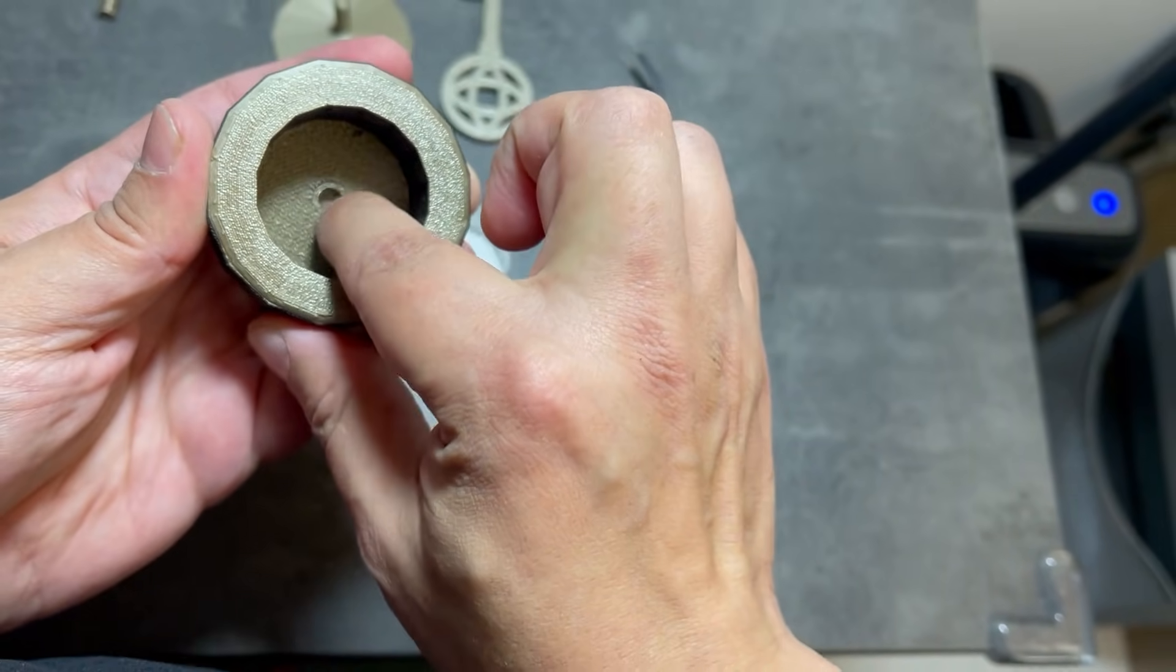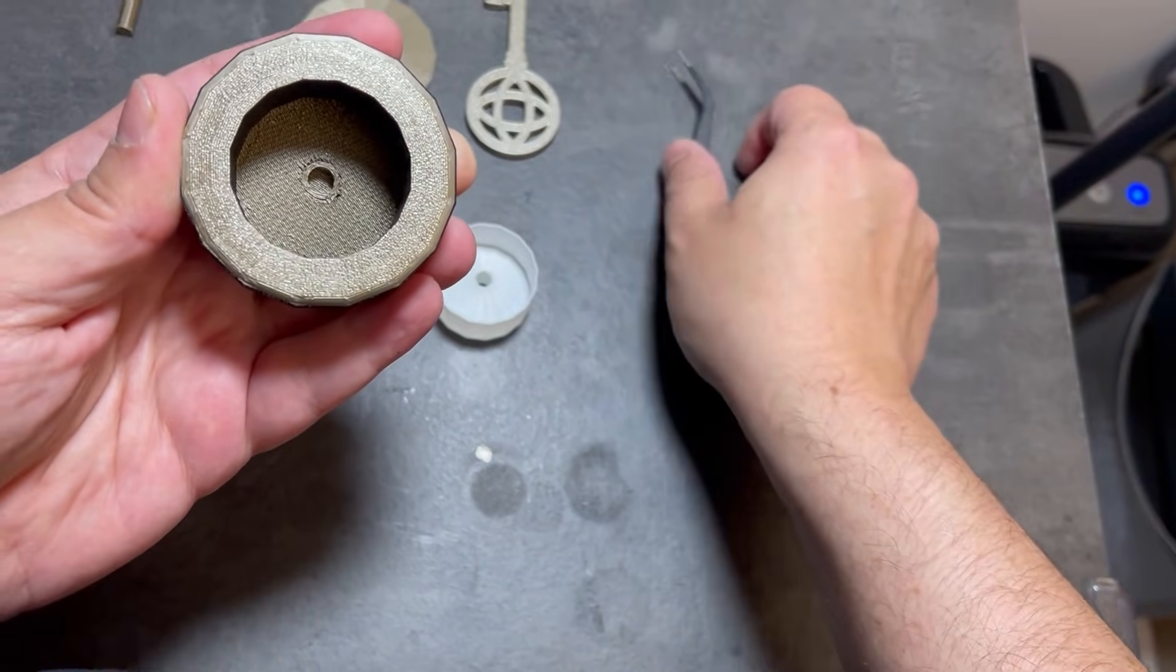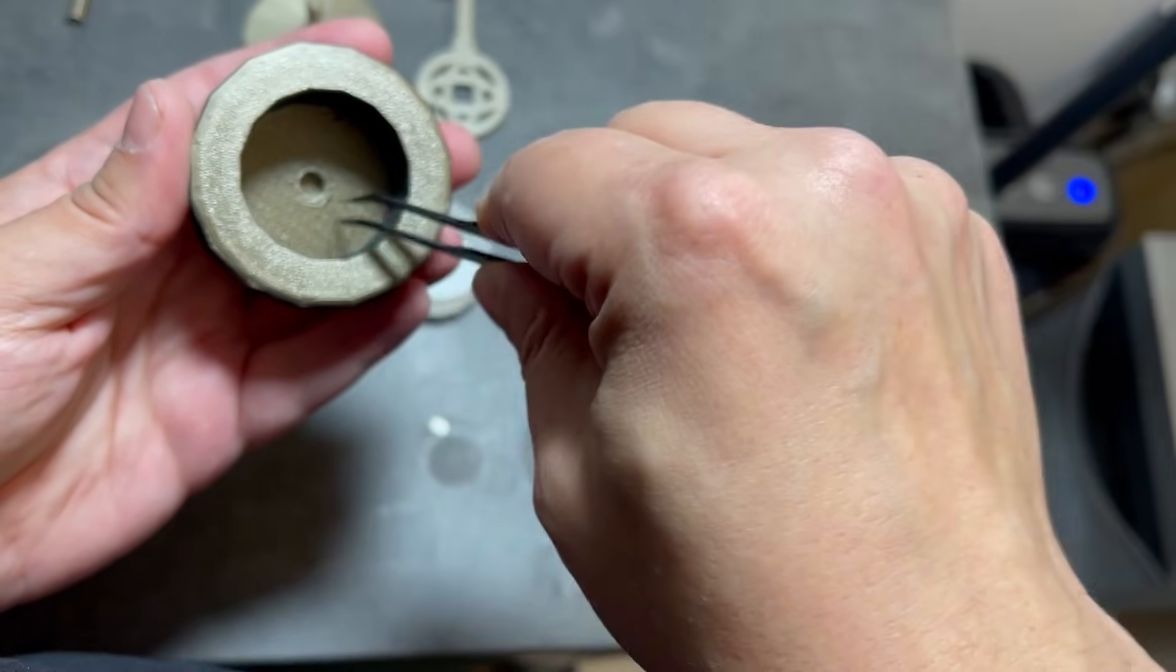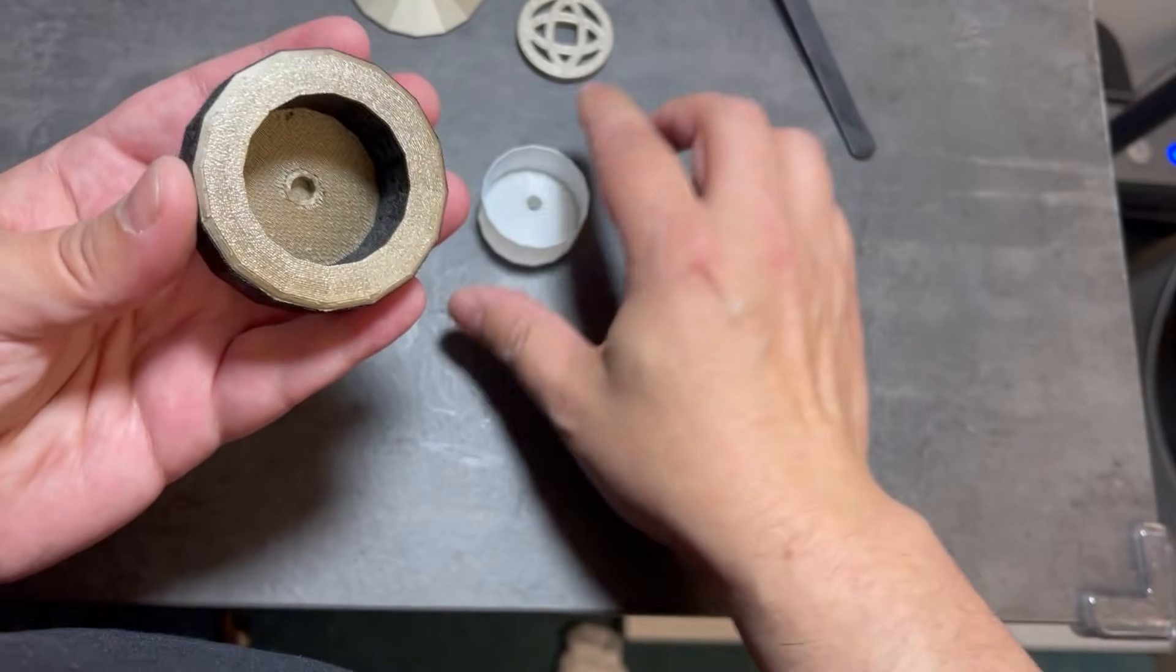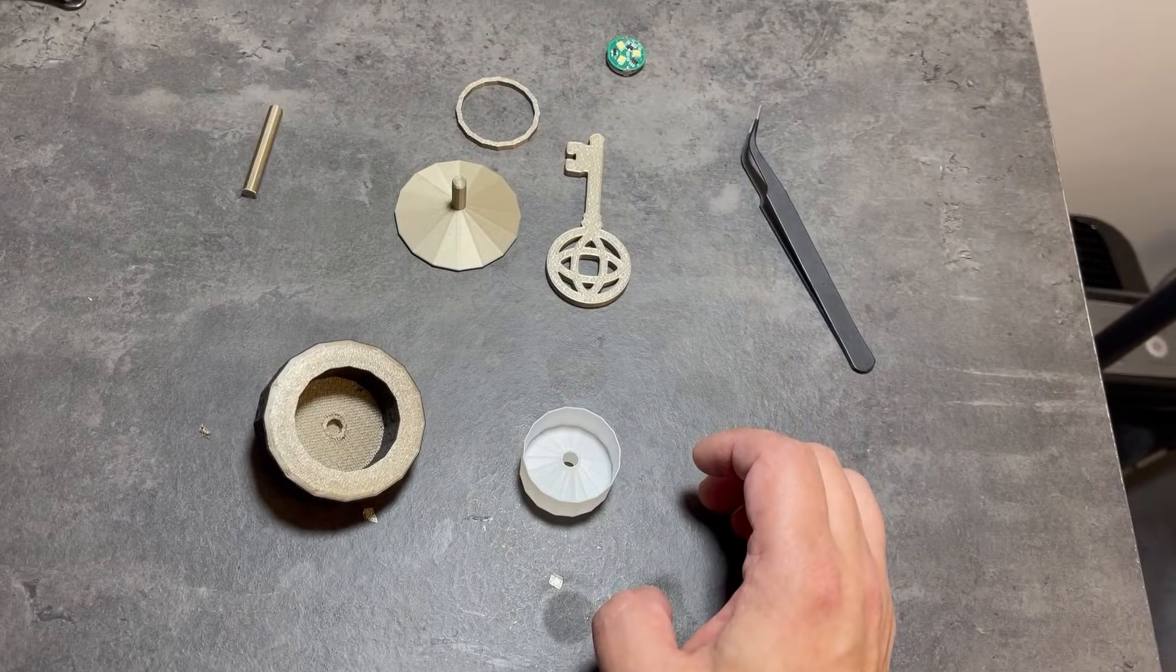Sometimes the little middle section doesn't come out when you do that. So for that, then you want to put like tweezers in and grab, twist. It should come out pretty easily though. It's not very hard.